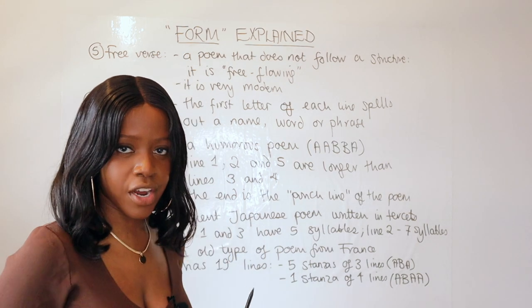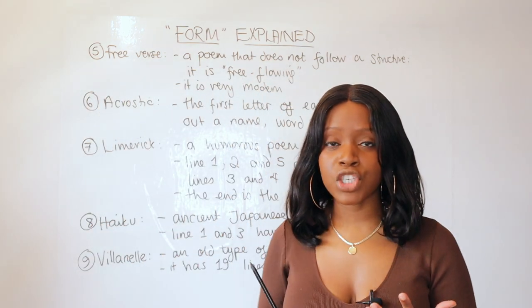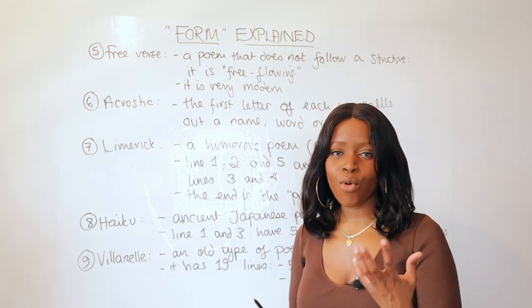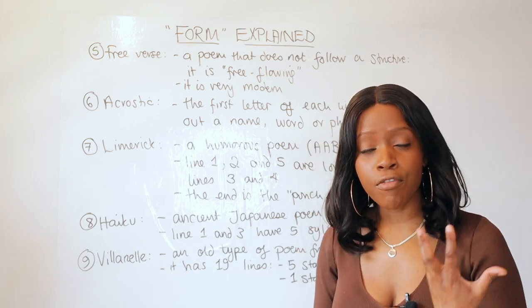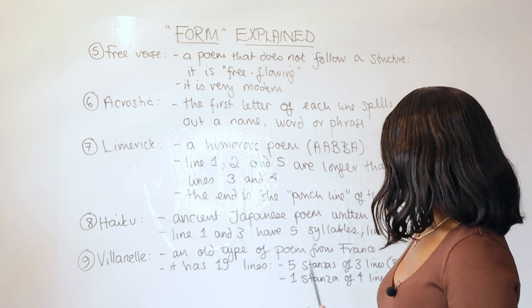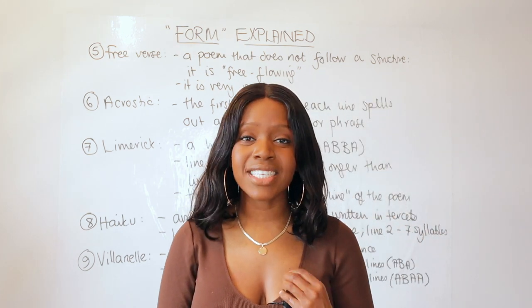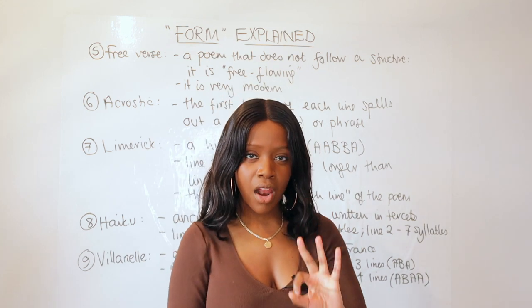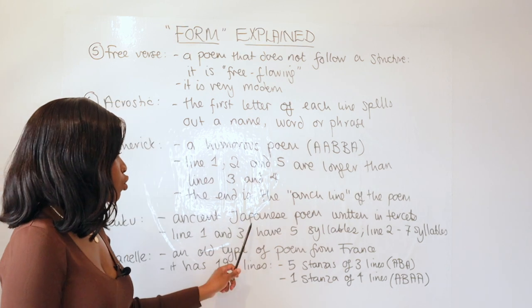Now moving on to a poem which is from Japan called the haiku. This is a very ancient Japanese form of poetry. So this ancient form of poetry is written in tersets, which is three-line stanzas. Remember that a haiku is a traditional Japanese poem that's written in tersets.